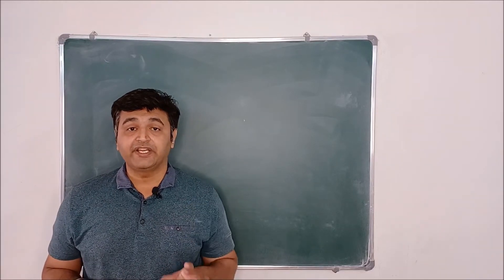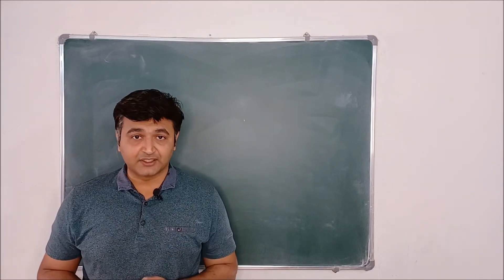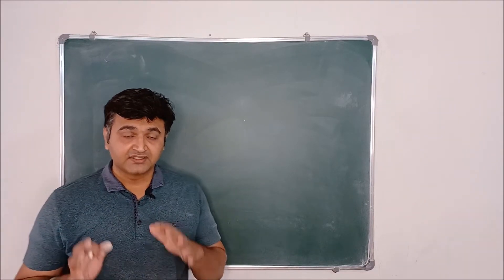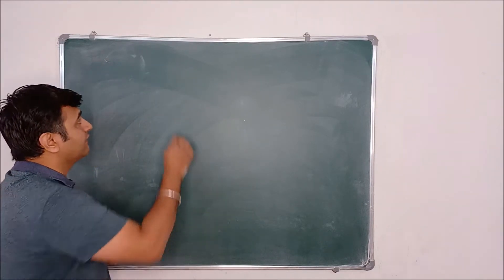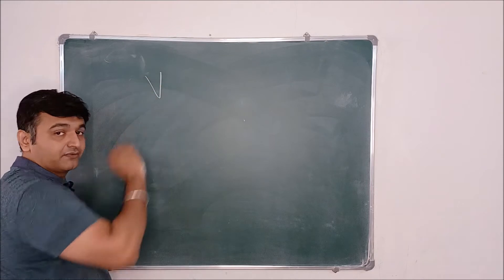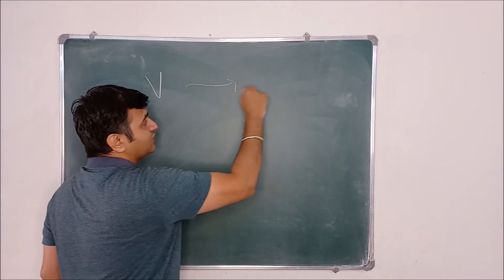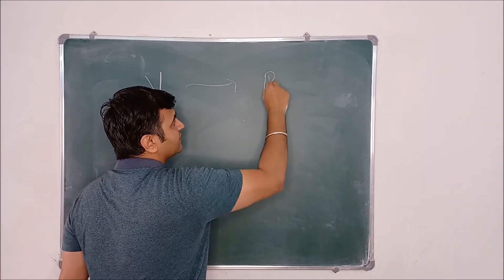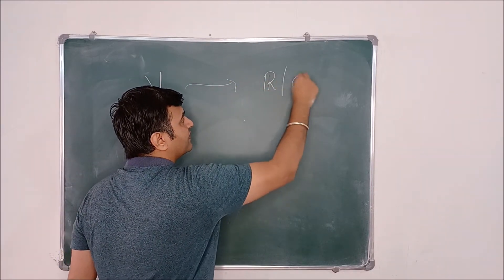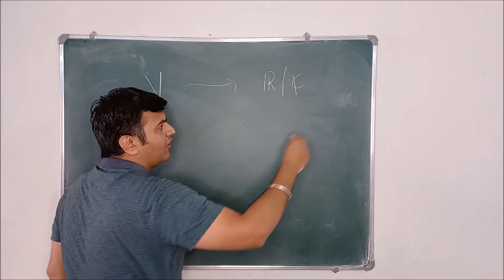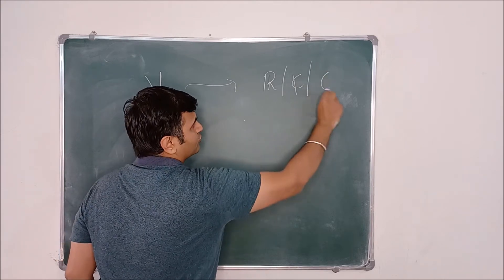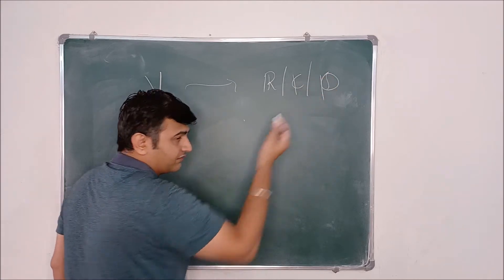Hey everyone. So today I'm going to answer a question. Suppose you have a vector space V, which is a vector space over real numbers, complex numbers, or rational numbers.